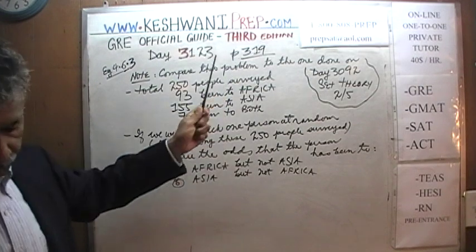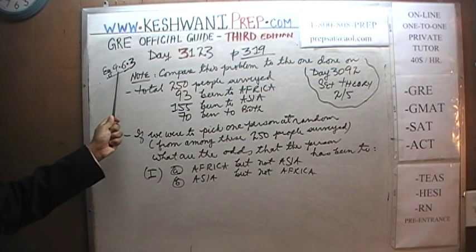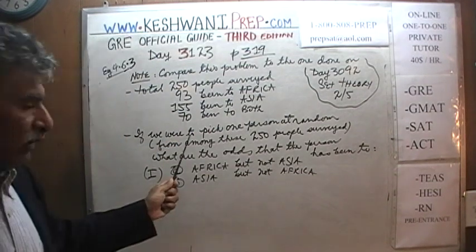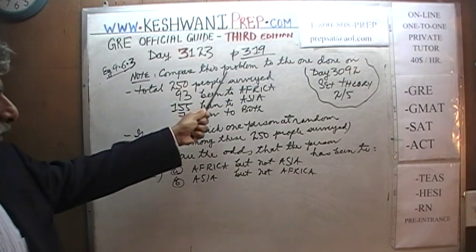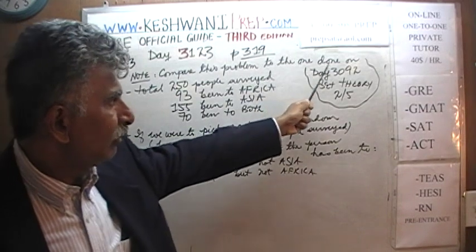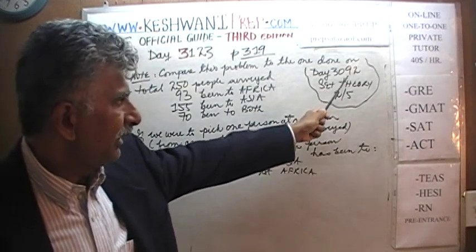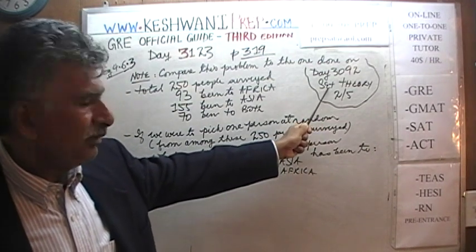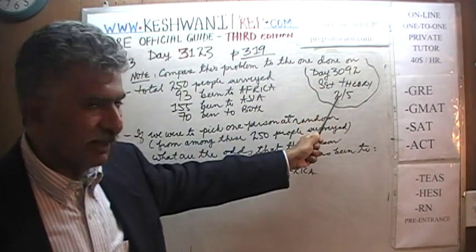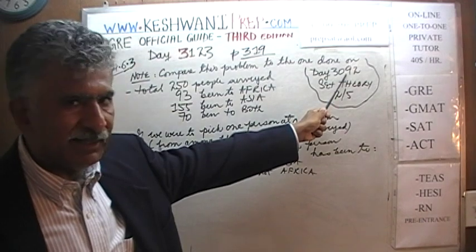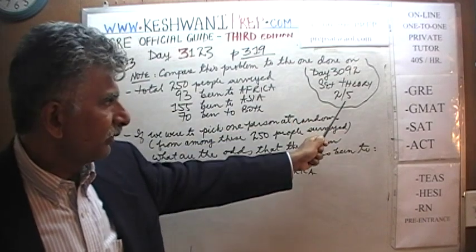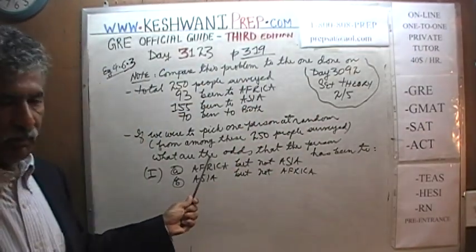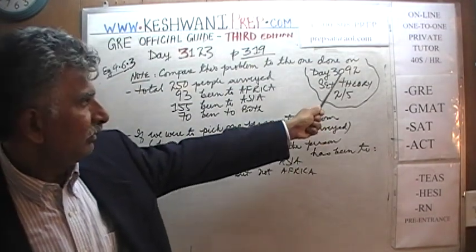We are on page number 319 and we are going to solve example 4.6.3. Before we get going, I would like you to compare this problem that we are about to do to the one that was done on day 3092 — day 92 — which was the series of 5 videos that we did on the topic of set theory. Day 92 was the second video in the series of 5, which begins with day 3091 through 3095. There are 5 videos on set theory and I would like you to compare this problem to the second in the series, the one we did on day 92.